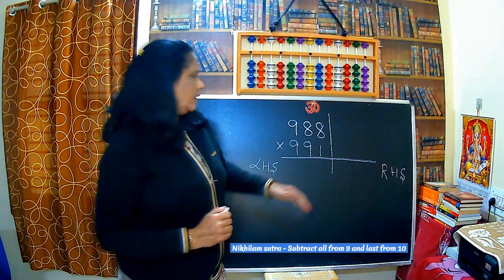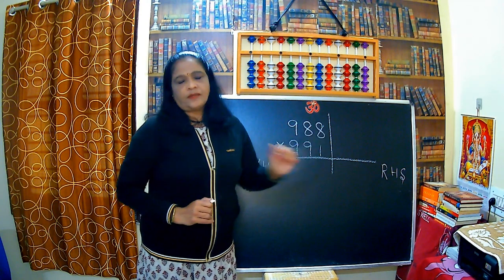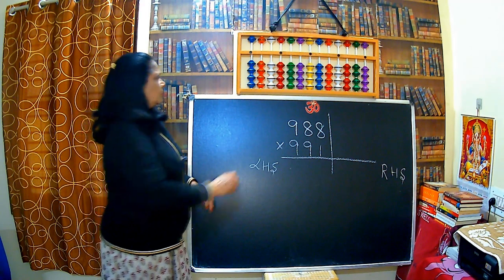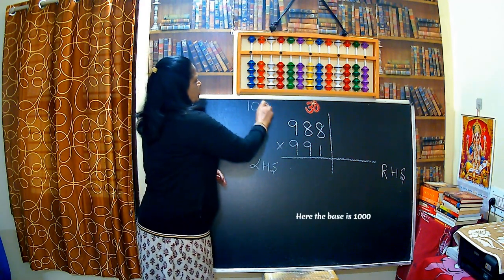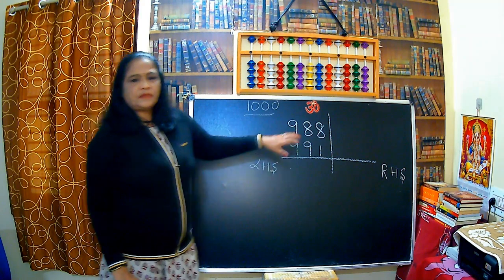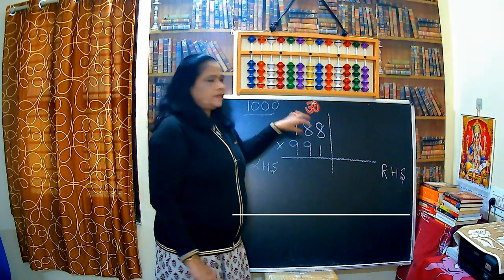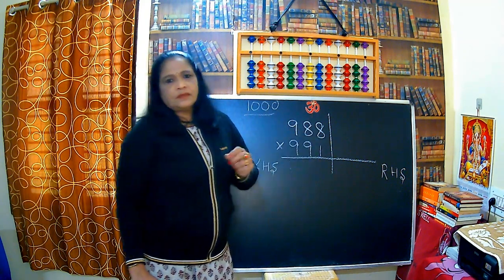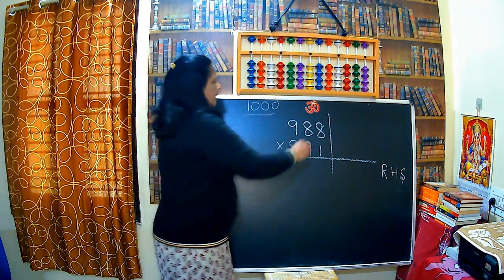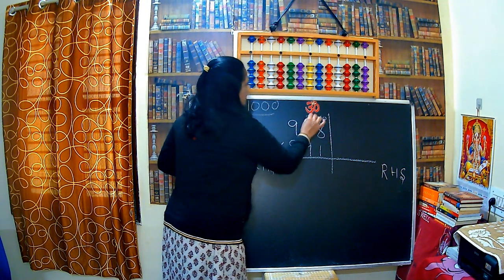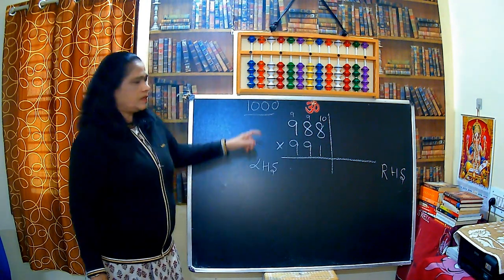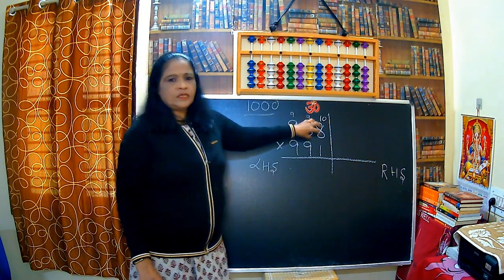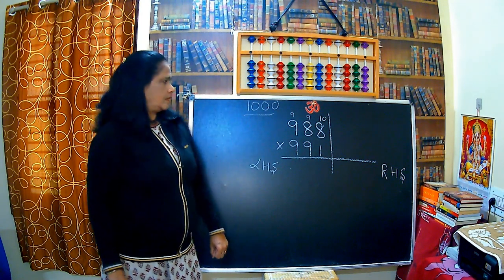That is for the subtraction. First, we find the base of the numbers. These numbers are very near to 1000, so the base is 1000. The second step is to subtract the given numbers by the base. While subtracting, we use the Nikhilam Sutra: subtract all from 9 and last from 10. We are not using 1000 at all; using the sutra, we can easily subtract.